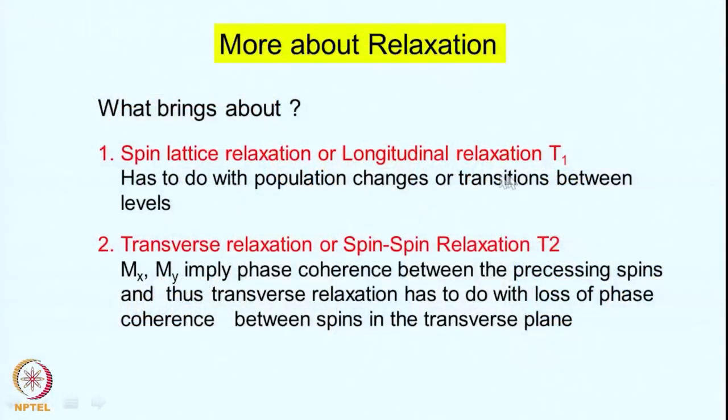Having discussed line shapes and how NMR signals are observed, we now return to the question of relaxation in somewhat more detail. We go into the mechanistic aspects — what brings about relaxation. Spin-lattice relaxation, or longitudinal relaxation T1, has to do with population changes between the levels; if there are transitions, the populations will change and the spin system will relax.